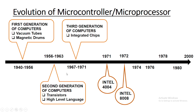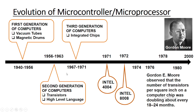Later in 1974, Intel came up with the 8080 processor — also an 8-bit processor — with an advancement in clock speed. Meanwhile, a software engineer named Gordon Moore observed that the number of transistors per square inch on a computer chip was doubling every 18 to 24 months, meaning we were increasing speed and decreasing the size of computers every 18 to 24 months. This statement is called Moore's Law.